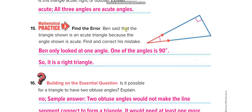Ben said that the triangle shown is an acute triangle because one angle shown is acute. However, Ben didn't notice the other angle — there is a right angle present — so it is actually a right triangle, not an acute triangle.